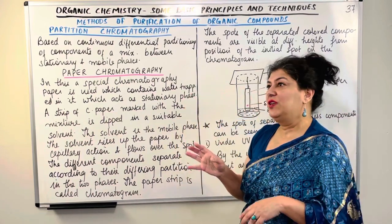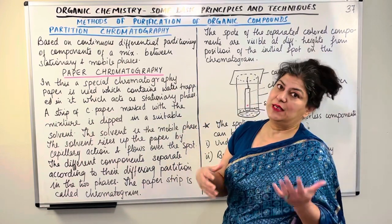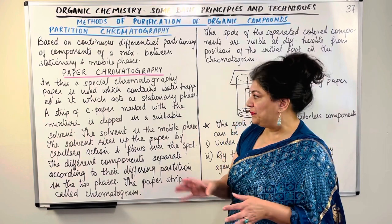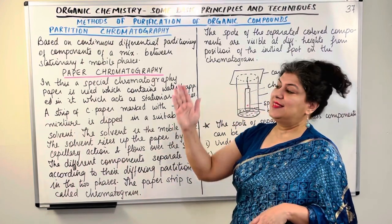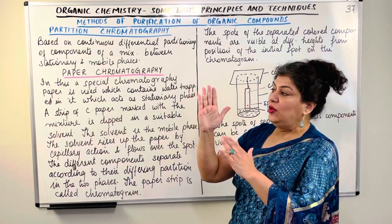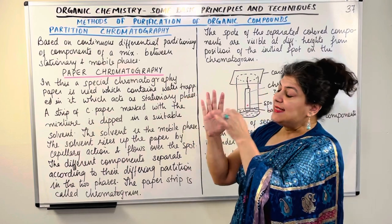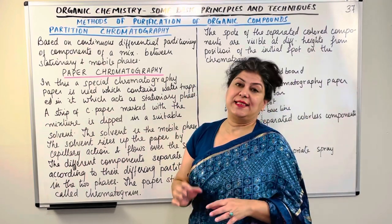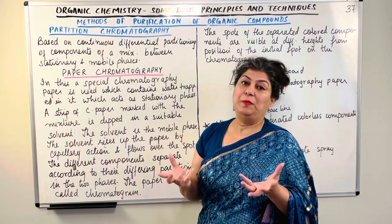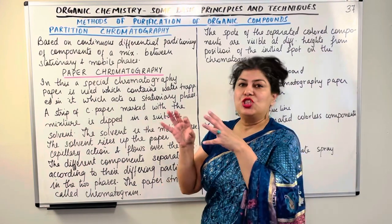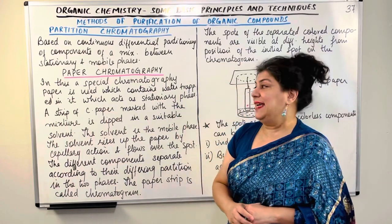The stationary phase could be a column of silica gel or alumina, as we did in thin layer chromatography. But in paper chromatography, the stationary phase is a paper in which water molecules have been trapped. It is these water molecules which act as the stationary phase. This paper is a special paper known as chromatography paper, which is specially used for this purpose because it traps those water molecules in it.